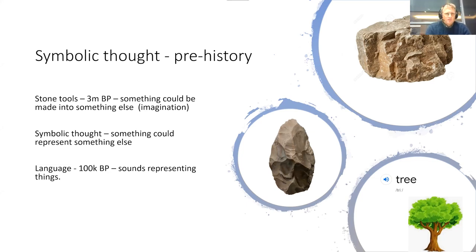Humans think in terms of models. I'm going to take it all the way back to stone tools, three million years before present, where humans first started making stone tools. They realized that something could be made into something else, and that required imagination. It created a feedback loop of millions of years which evolved our imagination capacities. Now symbolic thought is the next step where you realize something could represent something else, and that's necessary for language. Language is about 100,000 years old, where we use sounds to represent things. The sound itself has got no relationship to the thing that it's representing. You need symbolic thought for that capacity.